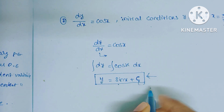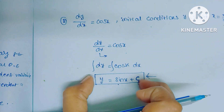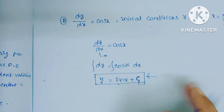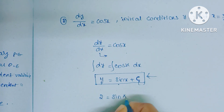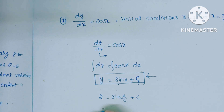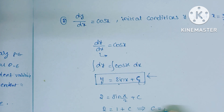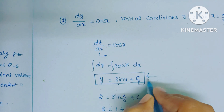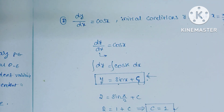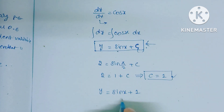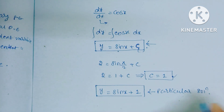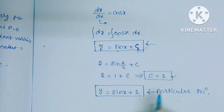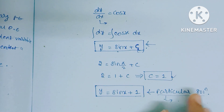After substituting the initial conditions into the general solution, we get the value of the constant c. They gave y = 2 at x = π/2, so substituting: 2 = sin(π/2) + c, and since sin 90° = 1, we get 2 = 1 + c, so c = 1. Substituting c = 1 back gives y = sin x + 1 — this is the particular solution. General solutions have a constant; particular solutions do not.